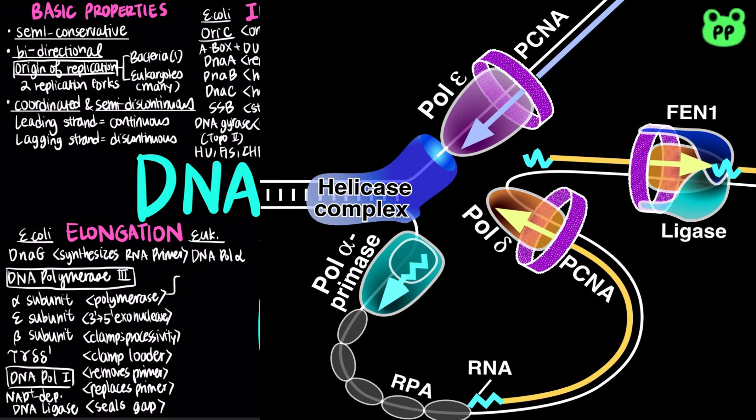The primary polymerases in eukaryotic replication are DNA polymerase epsilon, which mainly synthesizes the leading strand, and DNA polymerase delta, which mainly synthesizes the lagging strand. Both polymerases contain 3' to 5' exonuclease proofreading activity.